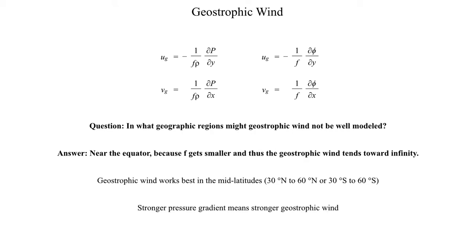Another thing to highlight is what lies on the right-hand side of the equation. If you have a strong pressure gradient, that means a very strong pressure gradient force, which in turn means a stronger geostrophic wind. Conversely, if the pressure gradient is very weak, the pressure gradient force is weak and the geostrophic wind would be very weak. So as the pressure gradient and pressure gradient force get stronger, the geostrophic wind also has to get stronger. On a weather map, if you see an area where the pressure gradient force is really strong, that implies the geostrophic wind is also very strong.